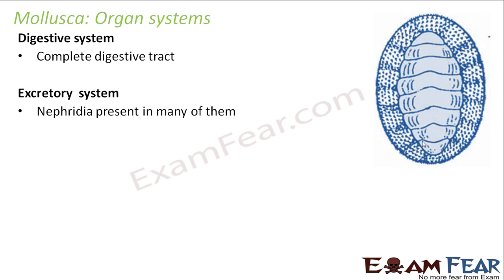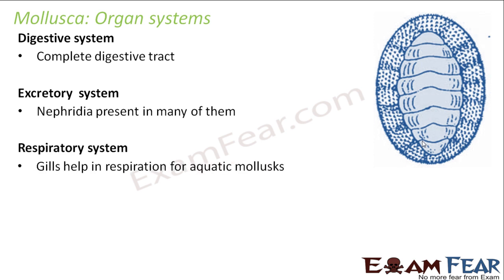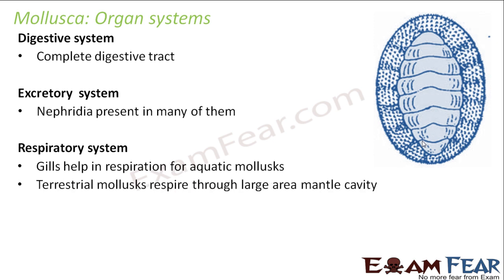Excretory system: they have nephridia present in many of them for excretion, removing waste products from the body. Respiratory system: aquatic molluscs have gills which help in respiration, as seen in the Chiton picture. For terrestrial molluscs, they have a large mantle cavity area and respiration happens through the surface of the mantle cavity. So gills for aquatic molluscs, and the mantle cavity is useful for terrestrial molluscs.